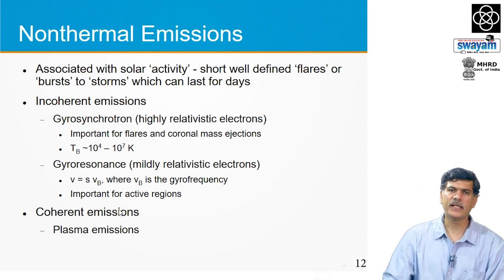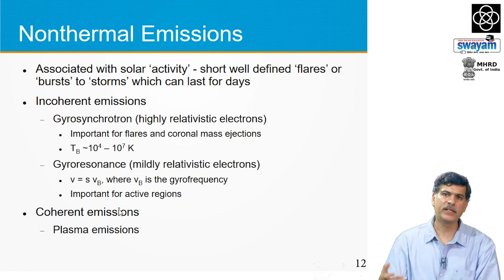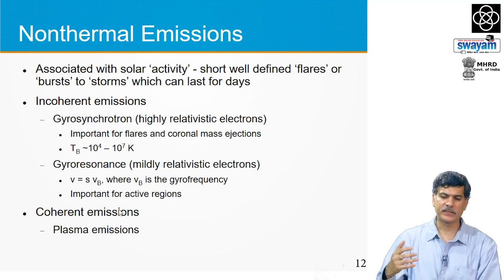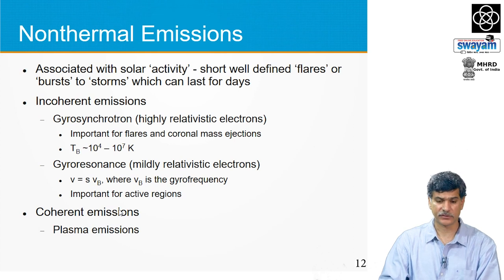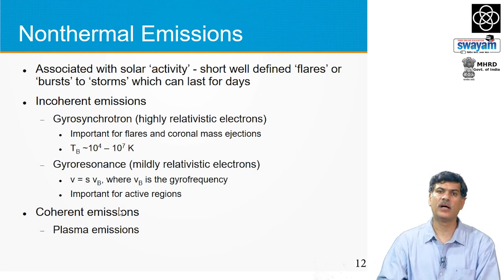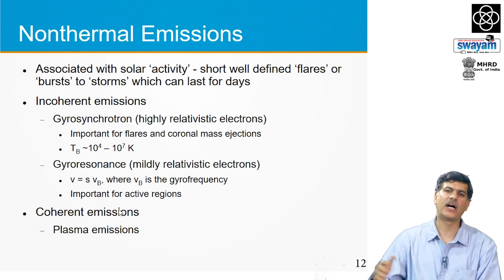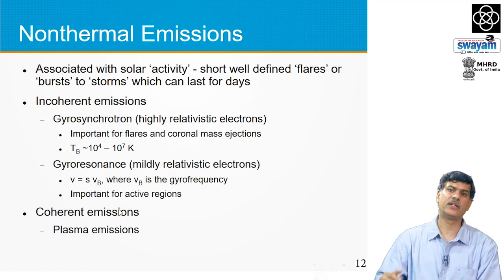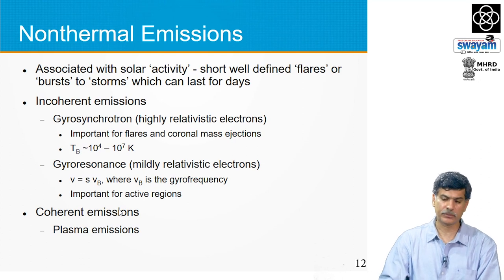Gyrosynchrotron emissions come from highly relativistic electrons as they gyrate along magnetic fields in the corona. These electrons are accelerated at the sites of flares — the same places where coronal mass ejections arise — and observed brightness temperatures have ranged from about 10 to the power 4 to 10 to the power 7 Kelvin. Gyroresonance is a similar phenomenon except the electrons are only mildly relativistic, and emission tends to occur at a resonance where the frequency equals some harmonic of the local gyrofrequency. This becomes important in regions of strong magnetic fields, which are found on the surface of the sun close to or inside the active regions.